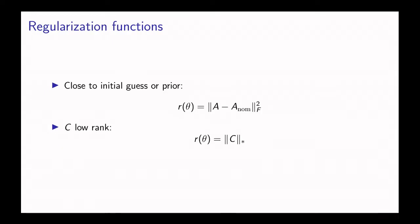In this slide we give two examples of regularization functions one could consider. One good one is when you have an initial guess or some prior on the parameters, and you want the parameters that you choose to be close to that. Here we say we have a guess for the dynamics matrix, A nominal, and we want A to be close to A nominal, so we could use this regularization function.